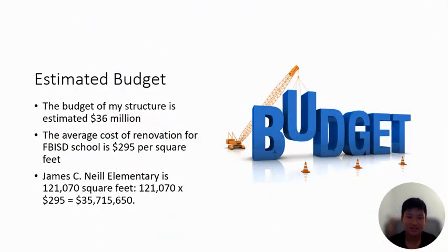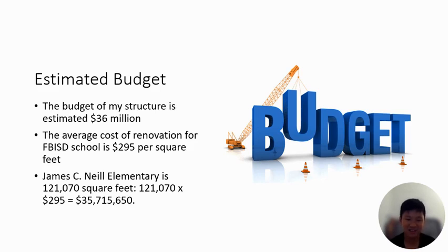Estimated budget: the budget of my structure is estimated at $36 million dollars. The average cost of renovation for an FBISD school is $295 per square foot. James C. Neal Elementary is 121,070 square feet. 121,070 times $295 equals approximately $35 million dollars.